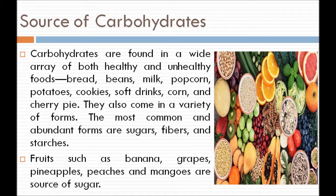The sources of carbohydrates are found in a wide variety of both healthy and unhealthy foods such as breads, beans, milk, popcorn, potatoes, tomatoes, soft drinks, corn, and cherry pie. They also come in a variety of forms. The most common and evident forms are sugar, fibers, and starch. Fruits such as banana, grapes, pineapples, peaches and mangoes are sources of sugar.